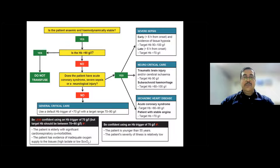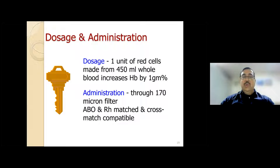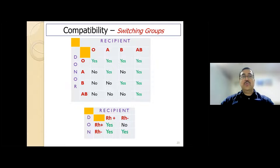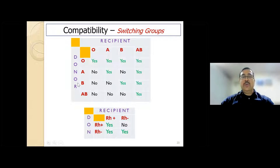For red cells, one unit increases hemoglobin by 1 g%. It is administered via a standard transfusion set and ABO/RH matching and cross-matching must be done before issue from the bank. Different groups can be used in the recipient based on a compatibility checkerboard. For example, an AB recipient can use AB, B, A, or O donor blood; a B recipient can use B or O. RH-positive blood can also be used in RH-negative recipients.